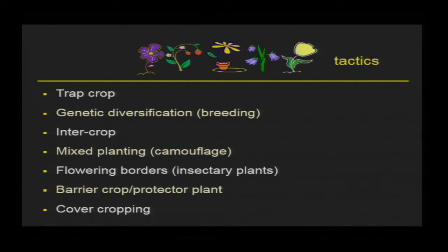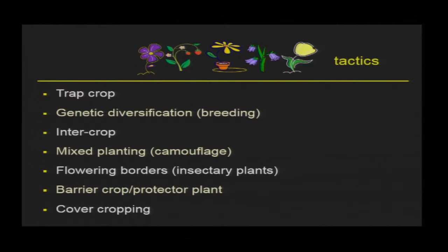When we think about plant diversification, there are several tactics within this strategy. One is trap cropping, where you plant a crop that is more favorable to the pest and attract it away from your cash crop. Genetic diversification — growing different cultivars of the same crop within the same field. Intercropping — growing two or more crops together. Mixed planting sometimes confuses insect pests and camouflages the cash crop. Then there's flowering borders, typically used to attract parasitoids to enhance their longevity and fecundity. And then there's barrier crops and, of course, cover cropping.